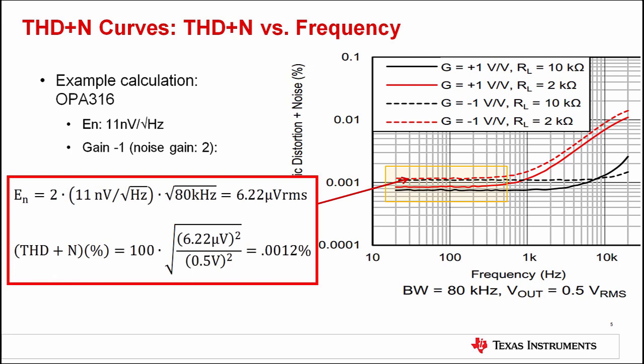If you know the broadband noise spectral density of an op amp, you can do a simple calculation for the THD plus N value in the noise-dominated region. For the OPA 316 example, the broadband spectral density is 11 nanovolts per root hertz from the datasheet. If we examine the gain equal to minus 1 case, the noise gain of this circuit is 2 volts per volt. The RMS noise voltage can be calculated by multiplying the 2 volts per volt noise gain with the noise spectral density of 11 nanovolts per root hertz and the square root of the measurement bandwidth. This yields a total RMS noise of 6.22 microvolts RMS. To calculate the THD plus N in that region, we need to know the amplitude of the fundamental. This is given in the plot test conditions as 0.5 volts RMS. Using the equation introduced earlier, we can enter the total RMS noise and signal amplitude and calculate the THD plus N. In this example, the calculated THD plus N is 0.0012%, which lines up well with the data in the curve.